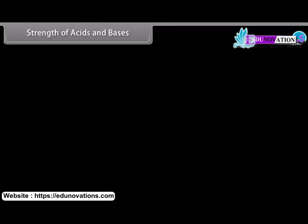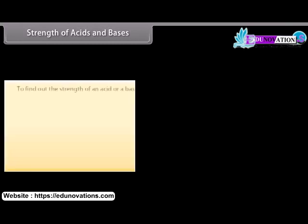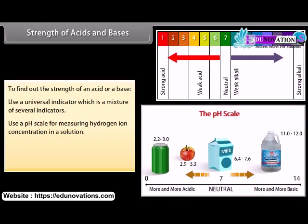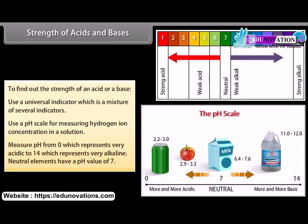Strength of acids and bases: You need to use a universal indicator to find the amounts of ions present in a solution, or to find out how strong an acid or base is. The universal indicator is a mixture of several indicators. It shows different colors at different concentrations of hydrogen ions in a solution. A pH scale is a scale for measuring hydrogen ion concentration in a solution. You can measure pH from 0, which represents very acidic, to 14, which represents very alkaline. Neutral elements have a pH value of 7.